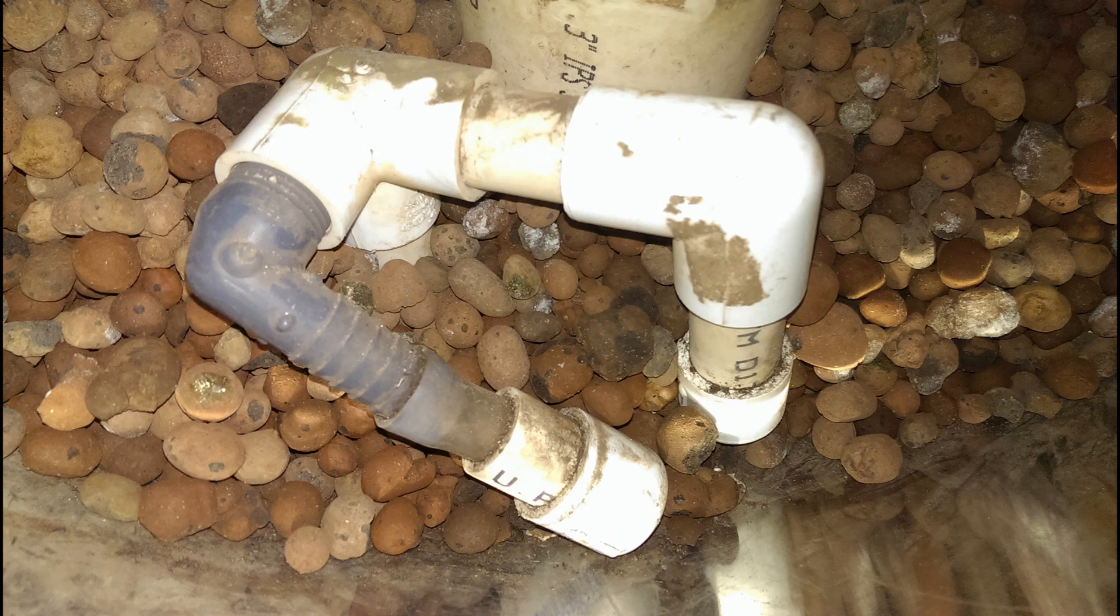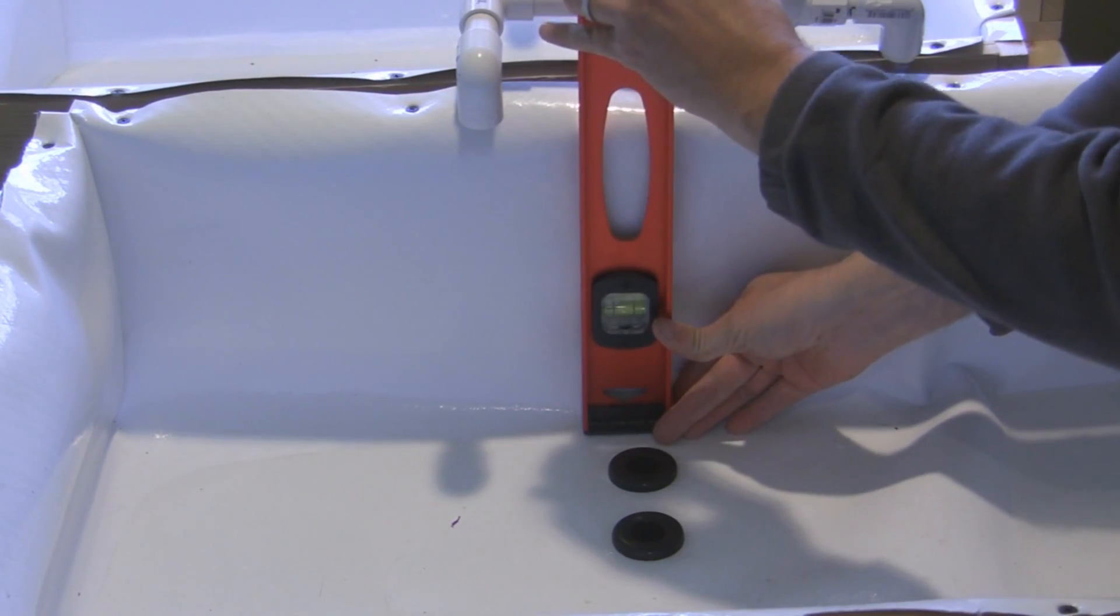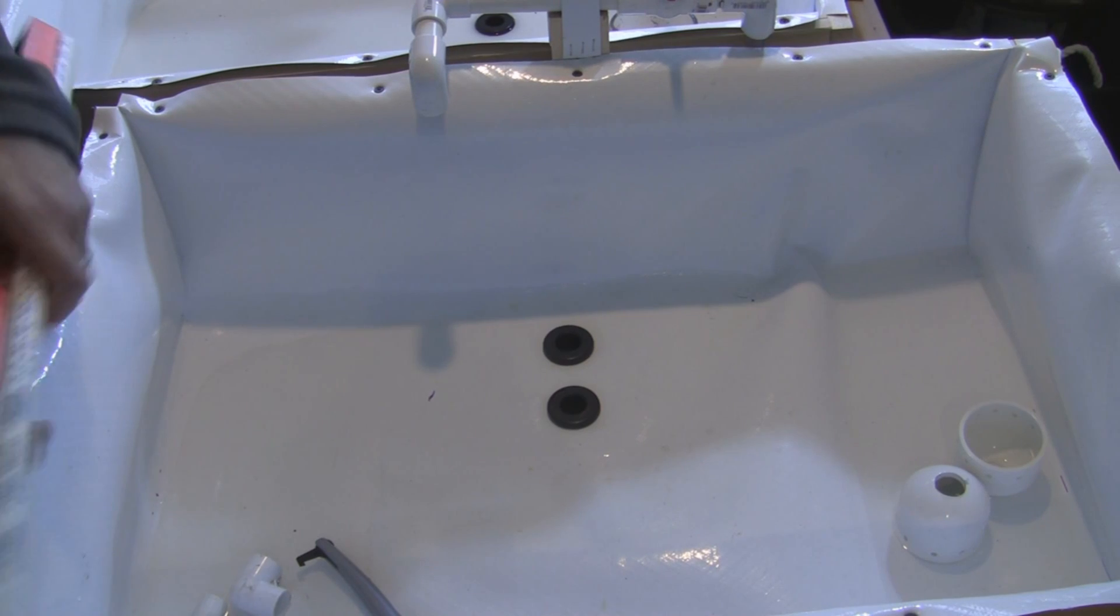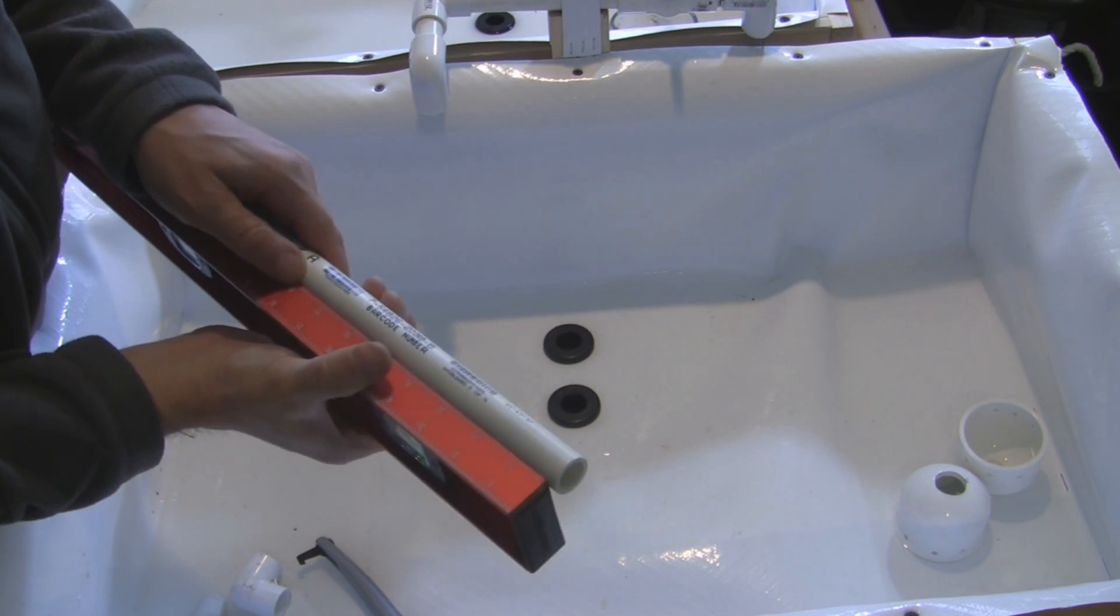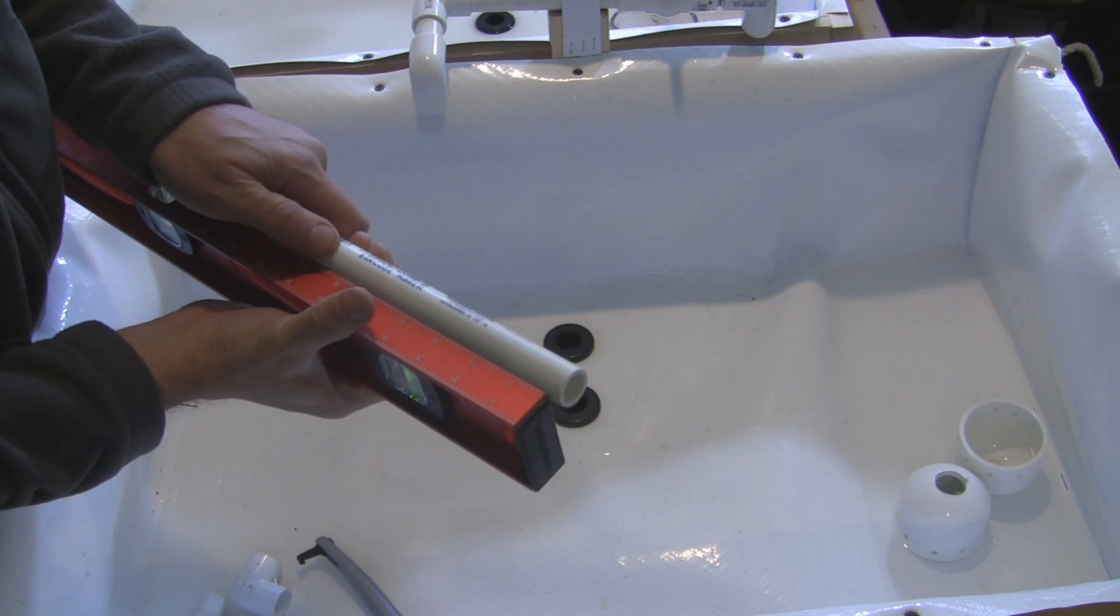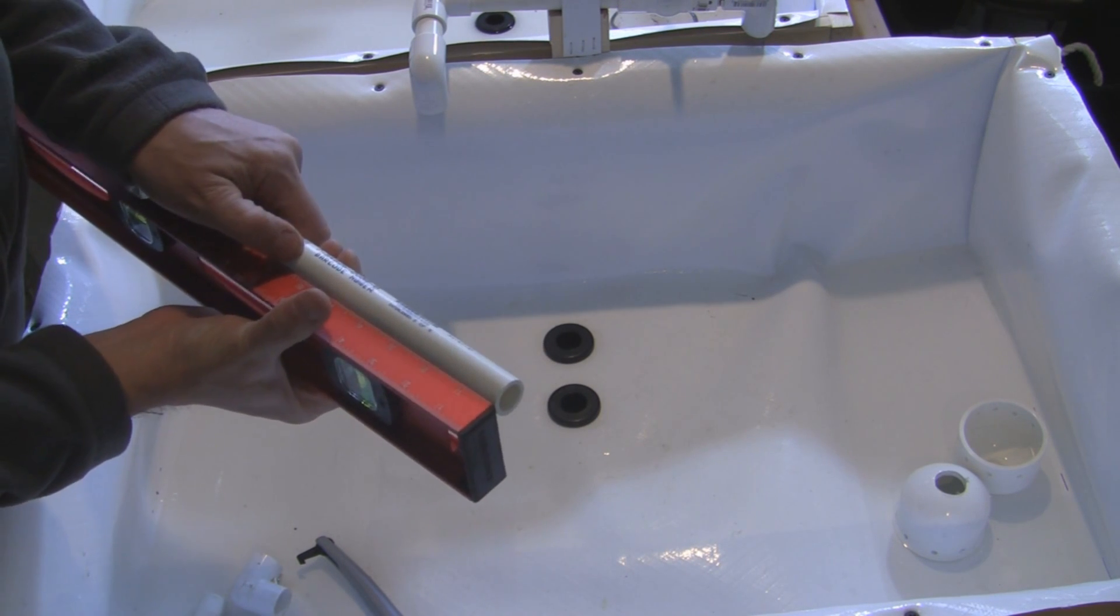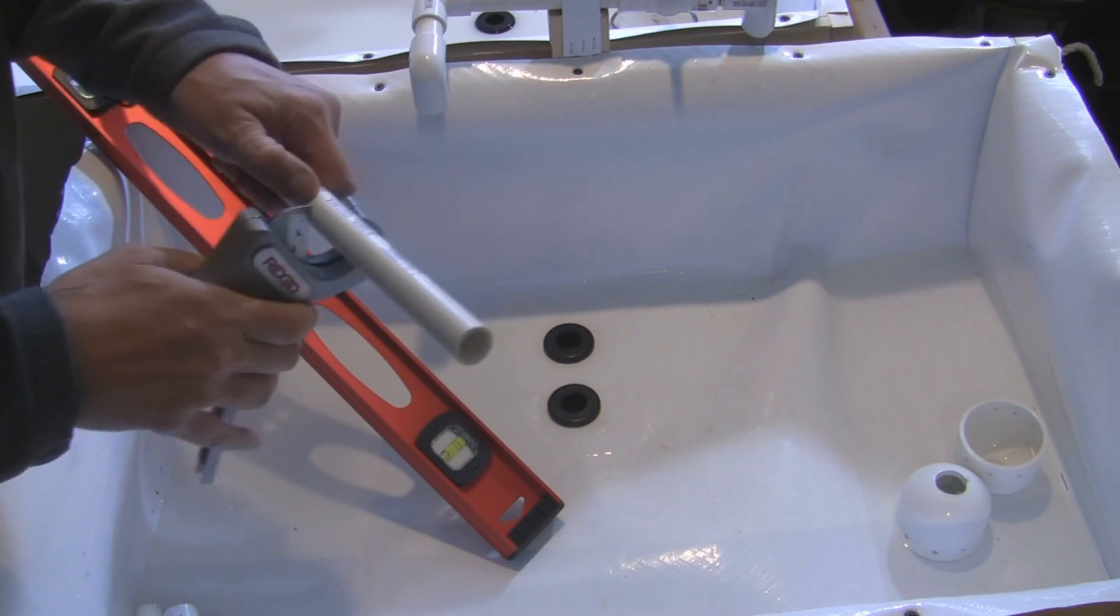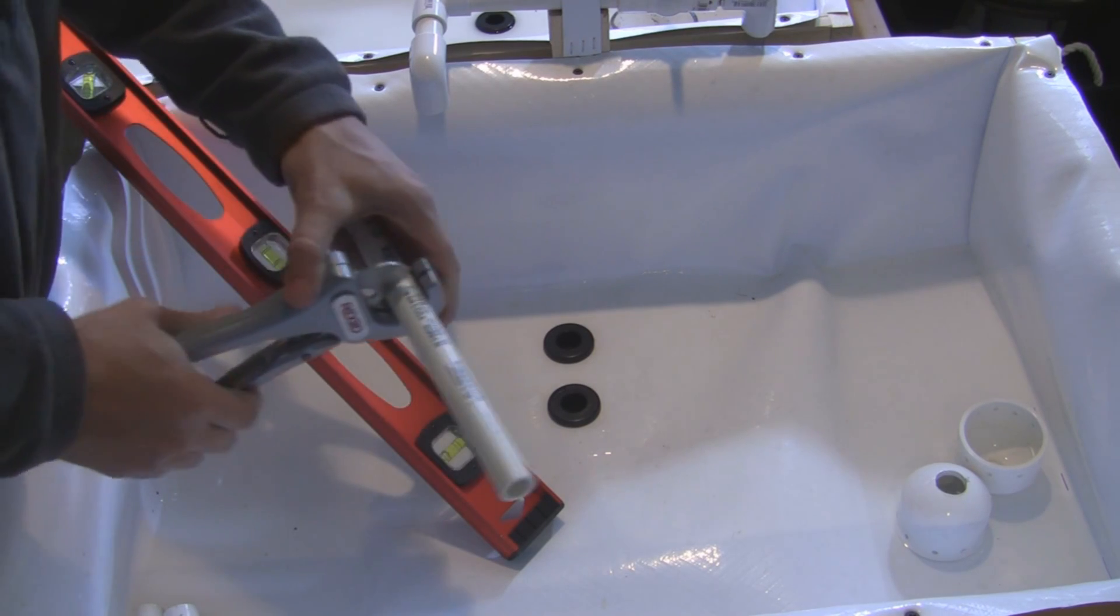So now let's set one up in our grow bed. First off, measuring my grow bed it's nine inches, and your grow bed will be different so you'll want to cut your standpipe appropriately. In this case I'm going to cut this standpipe to about six inches—that's about three inches below the lip of my grow bed.